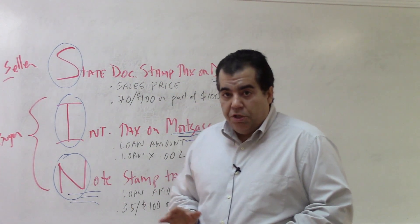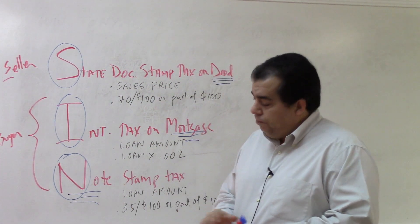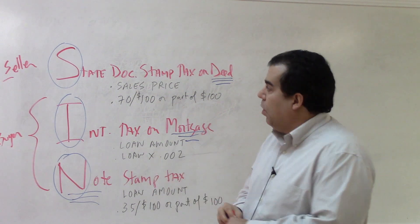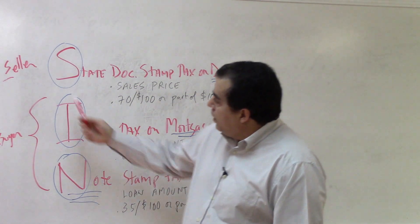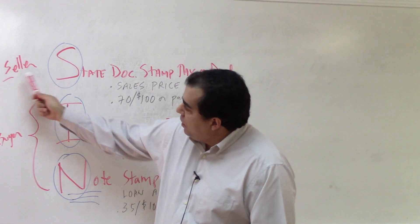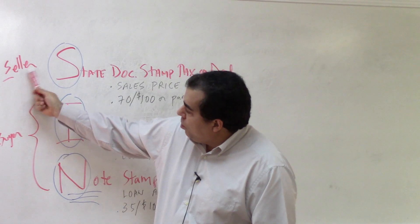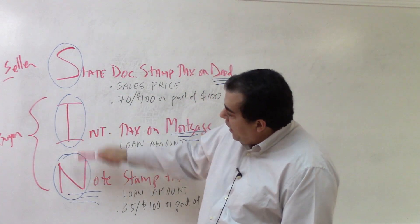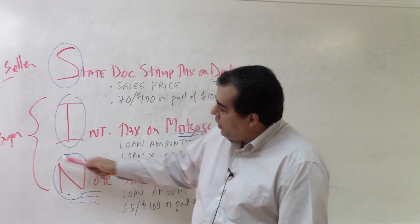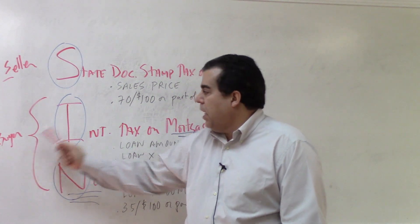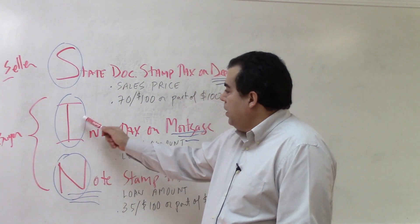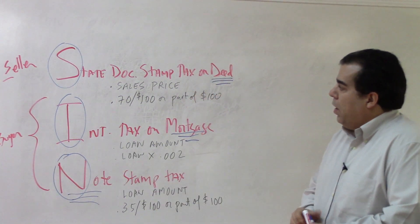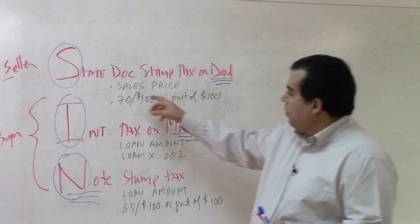All closing costs are negotiable — you can always contractually change who pays what. But normally, the seller pays the tax on the deed (S-S: seller pays state doc stamp), and the buyer — who moves in — normally pays the intangible tax on the mortgage and the note stamp tax.